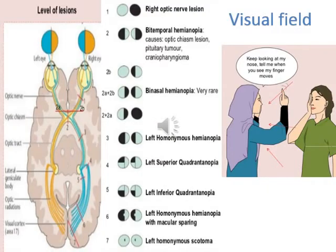Visual field examination is done by the confrontation test as illustrated here in the right picture. According to the level of the lesion in the optic pathway, it will lead to different visual field defects. For example, if the lesion is at the optic chiasm, this will lead to bitemporal hemianopia or binasal hemianopia. If the lesion is in the optic tract, this will lead to homonymous hemianopia. If the lesion is in the visual cortex, it leads to homonymous hemianopia with macular sparing, because the macula is bilaterally represented.